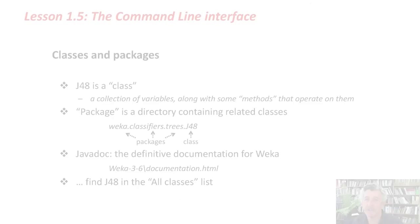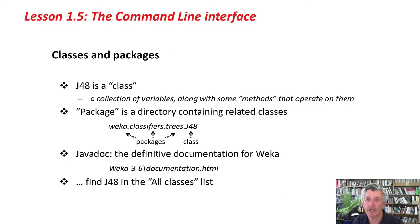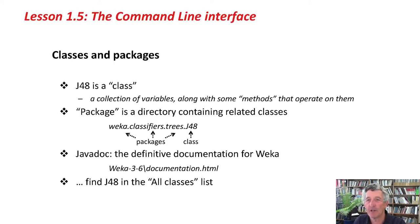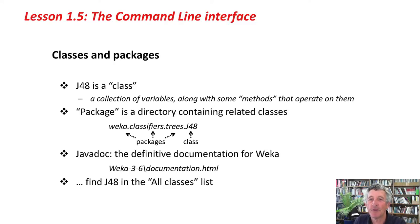Now I want to talk about this complicated name: weka.classifiers.trees.j48. J48 is a class, which roughly means a program in Java — it's a collection of variables along with some methods that operate on those variables. Classes come in packages. A package is a directory containing related classes. J48 is in the trees package, and the trees package is part of the classifiers package.